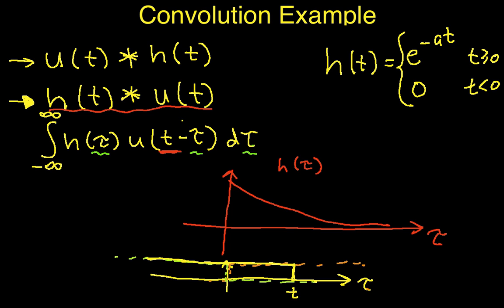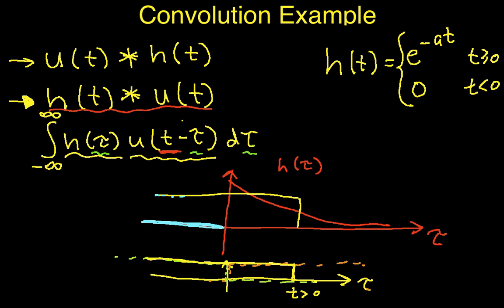According to this integral, I have to take h of tau and multiply it by u of t minus tau. For the case that t is greater than zero, let's draw u of t minus tau on the same plot as h of tau. For values of tau less than zero, h of tau equals zero, so the product of u of t minus tau and zero is zero. For values of tau greater than t, u of t minus tau is zero, so the product of h of tau and u of t minus tau is also zero.